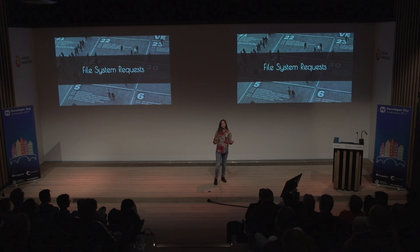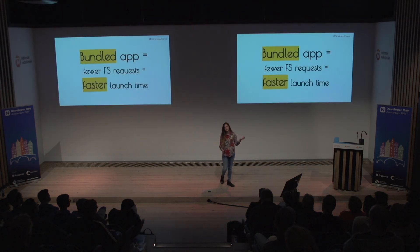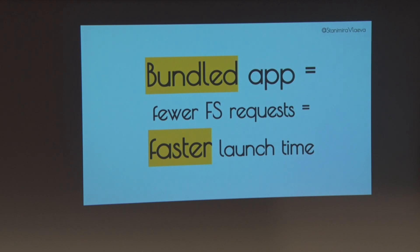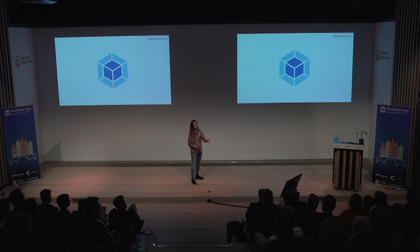Imagine you have node modules — sometimes you have to. If you make a million file system requests when you boot up your application, it will take quite some time. The easiest solution is to bundle your project into a few output files. The idea is that instead of a million requests on startup, you make three, five, or even ten — much better. Fewer file system requests means faster launch times. In NativeScript, the way to do that is with Webpack. I love Webpack, that's why I recommend it.